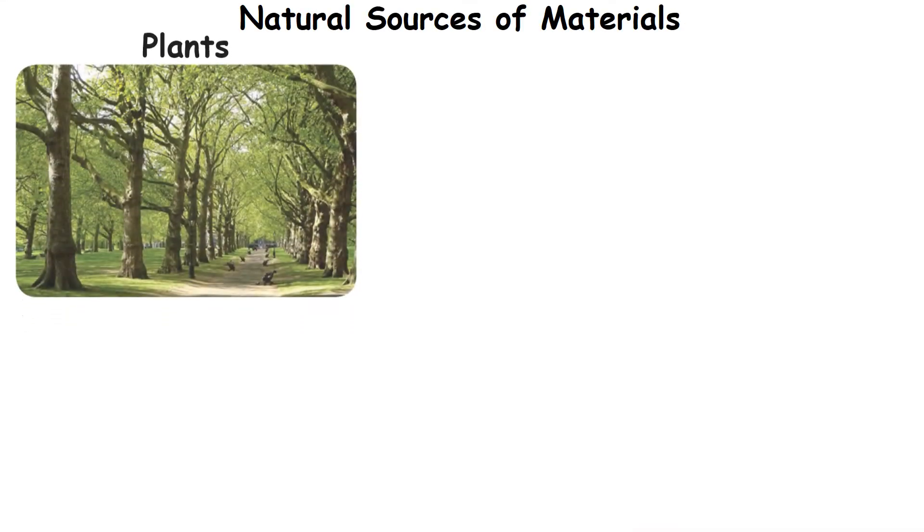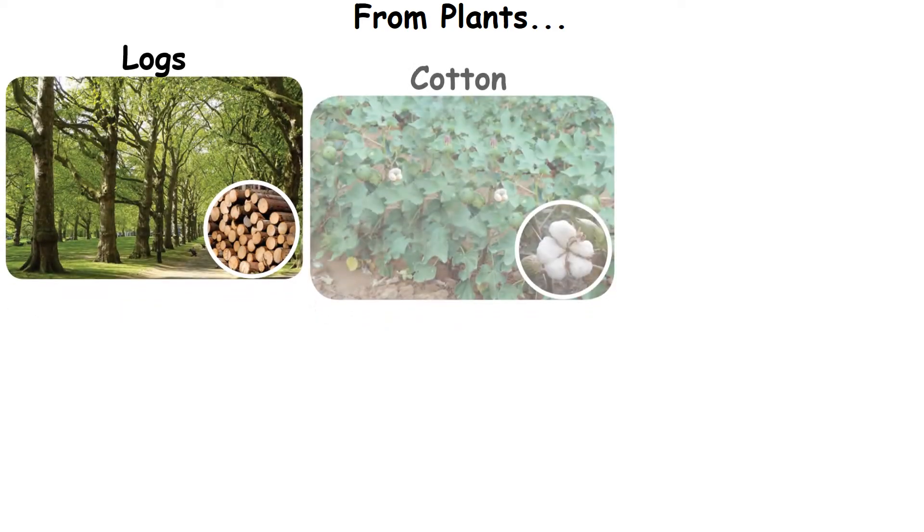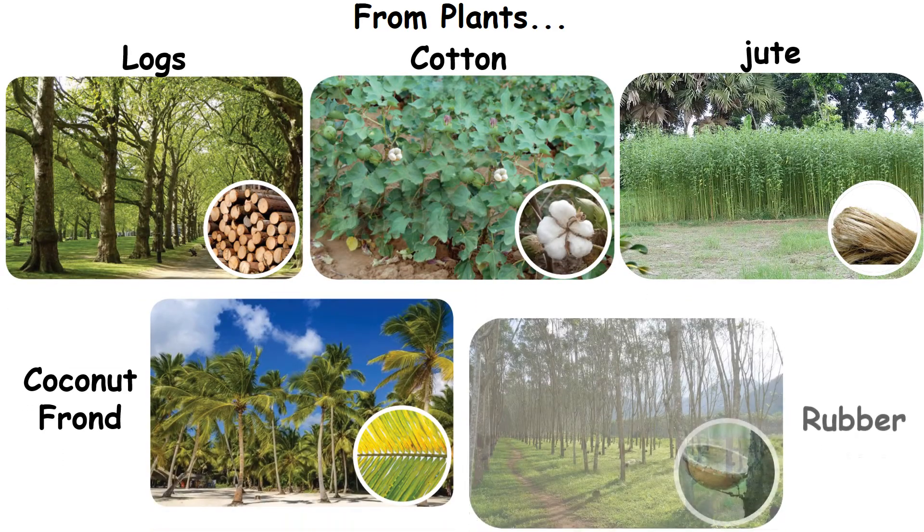The natural sources of materials are plants, animals, rocks and soil. From plants, we get logs, cotton, jute, coconut froth and rubber.